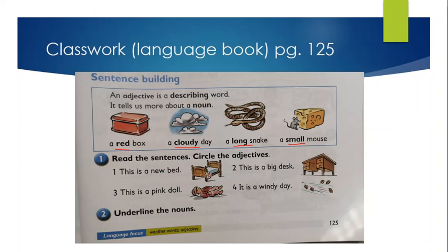Now, read the sentences and circle Adjectives in each sentence. Sentence number one. This is a new bed. New is an Adjective. This is a big desk. Big is an Adjective, which is describing the desk. This is a pink doll. Pink is an Adjective. It is a windy day. Windy is an Adjective.